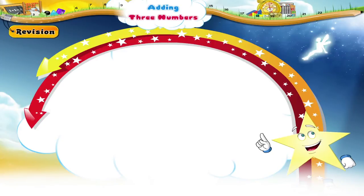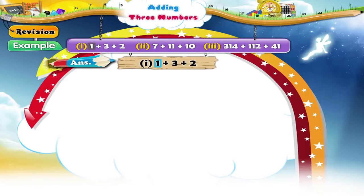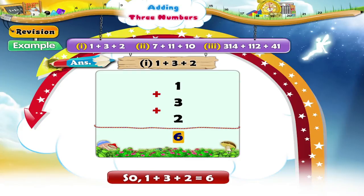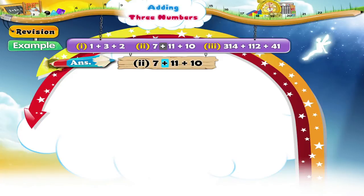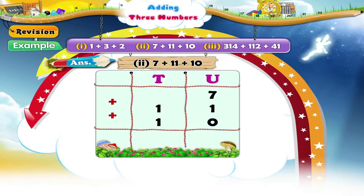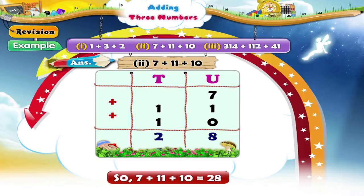Let us revise what we have learned today. Add the following: one plus three plus two. We arrange the numbers vertically — one plus three plus two equals six. Next: seven plus eleven plus ten. We arrange the numbers vertically. In the units place, seven plus one plus zero equals eight. In the tens place, one plus one equals two. So the answer is twenty-eight.